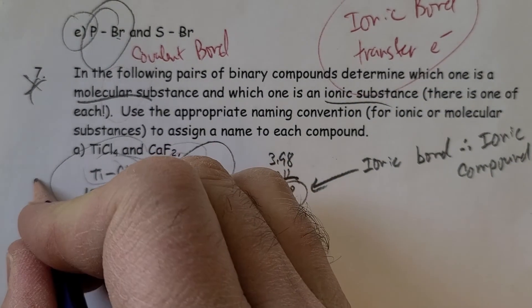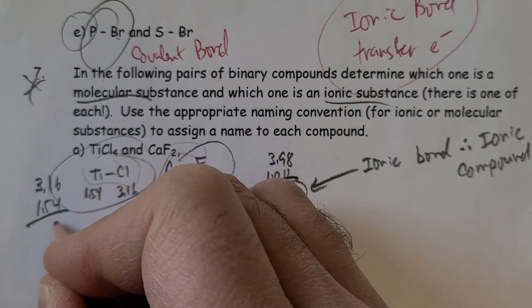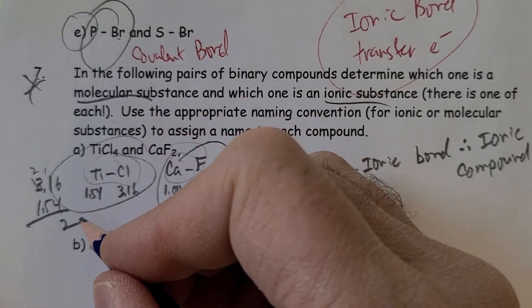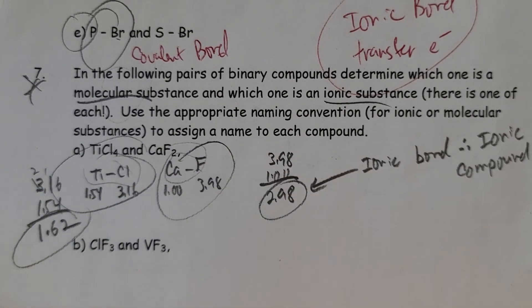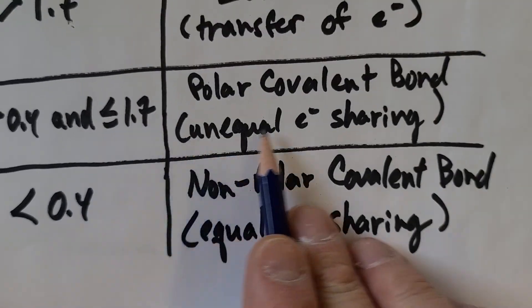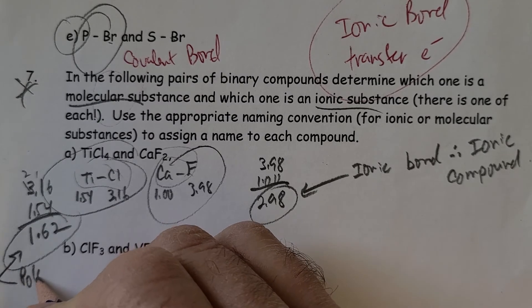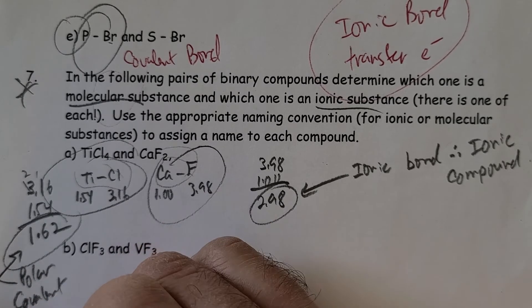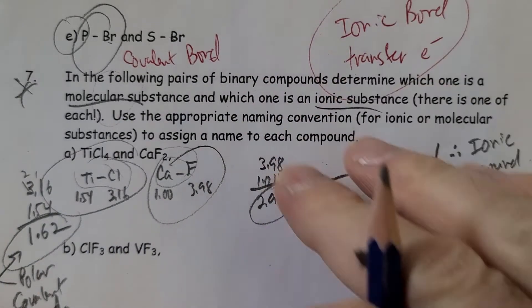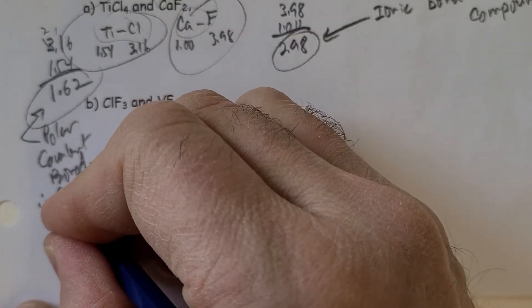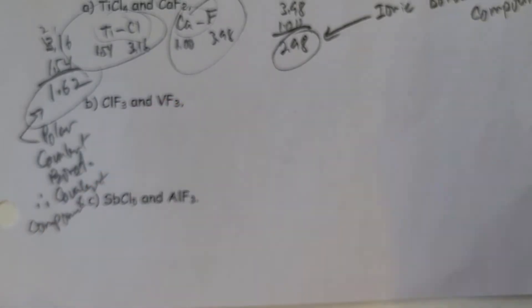For the titanium-chlorine bond: 3.16 − 1.54 = 1.62. That's just under 1.7, so it's polar covalent — therefore a covalent (molecular) compound.